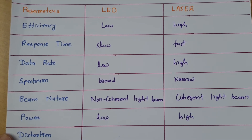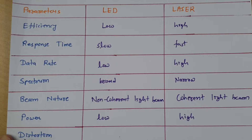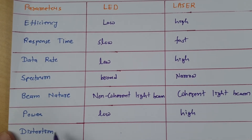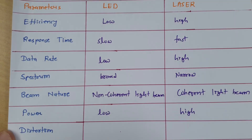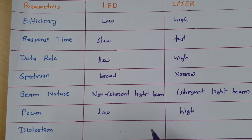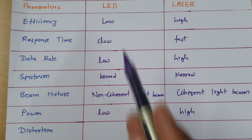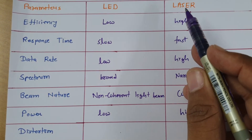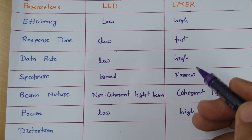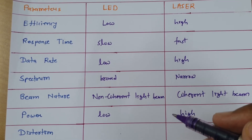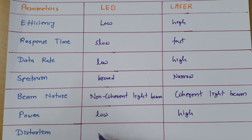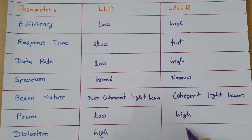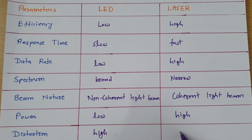Regarding distortion received at the output side, distortion will be high in the case of LED and distortion will be low in the case of laser when we send a signal as light through the optical cable.